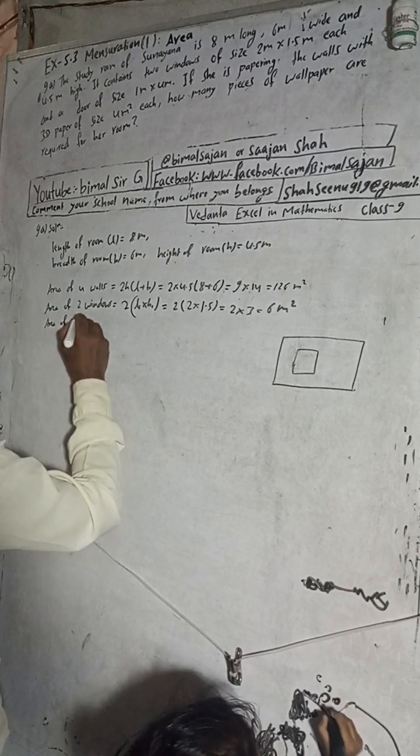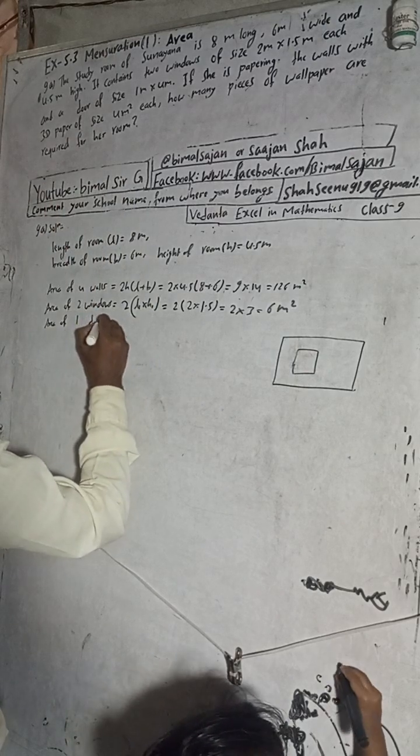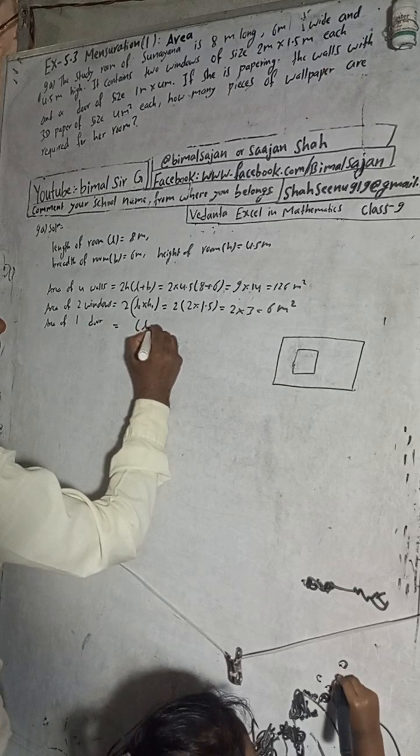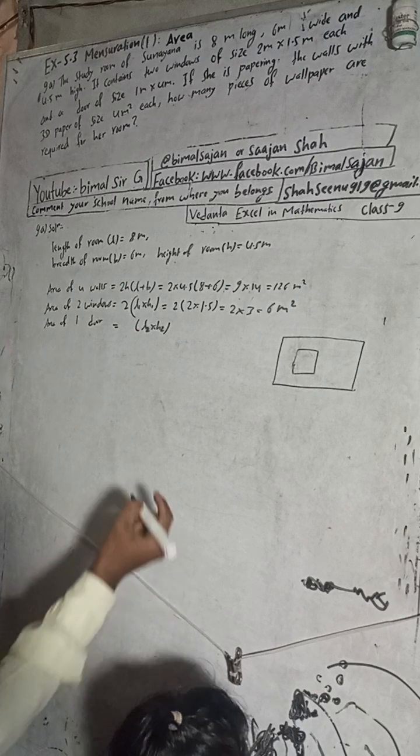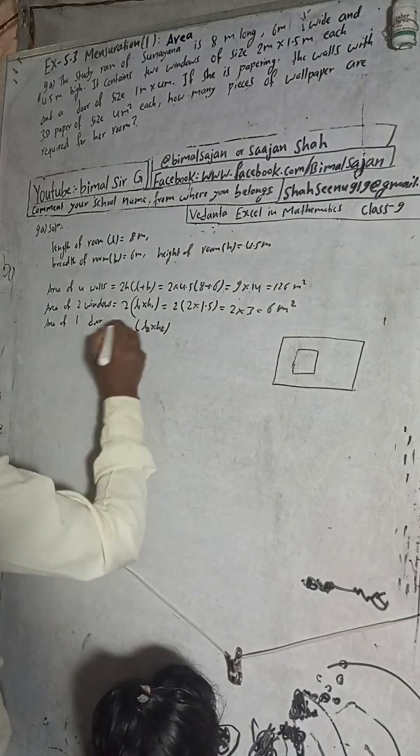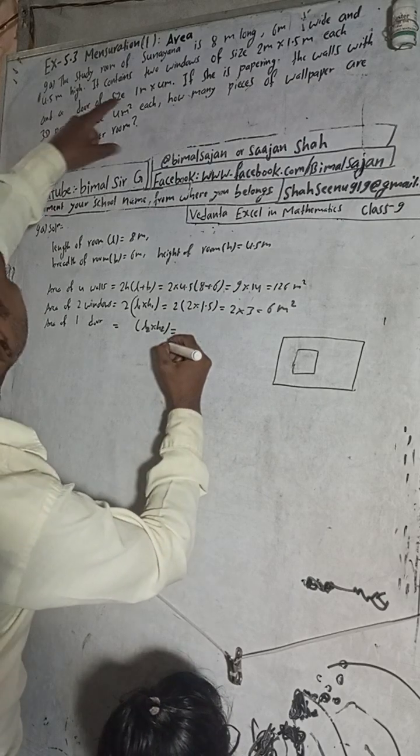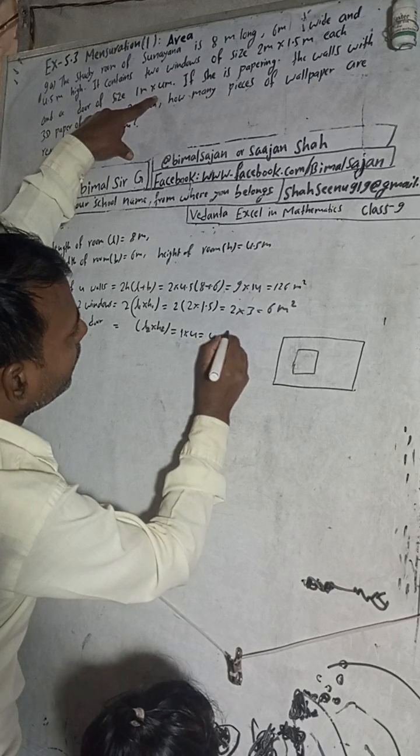Now area of one door. Area of door is 1 × 4 meter square.